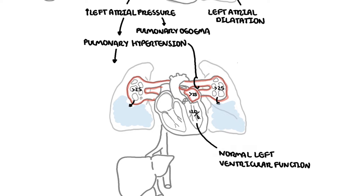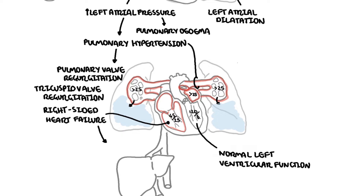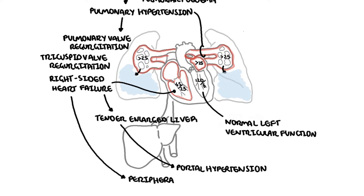As left atrial pressure rises, pulmonary hypertension occurs, which can lead to pulmonary regurgitation, as well as tricuspid regurgitation, and then secondary right-sided heart failure. Right-sided heart failure causes pressure to increase in the venous circulation, so blood returning to the right side of the heart pools backwards, leading to a tender enlarged liver, portal hypertension, ascites, and peripheral edema.